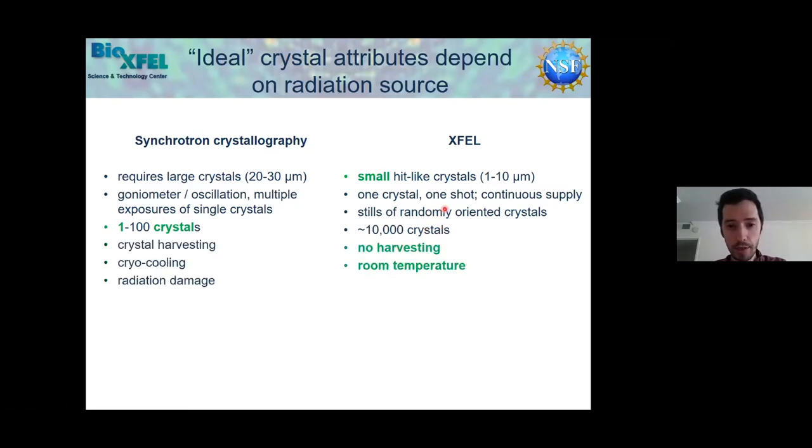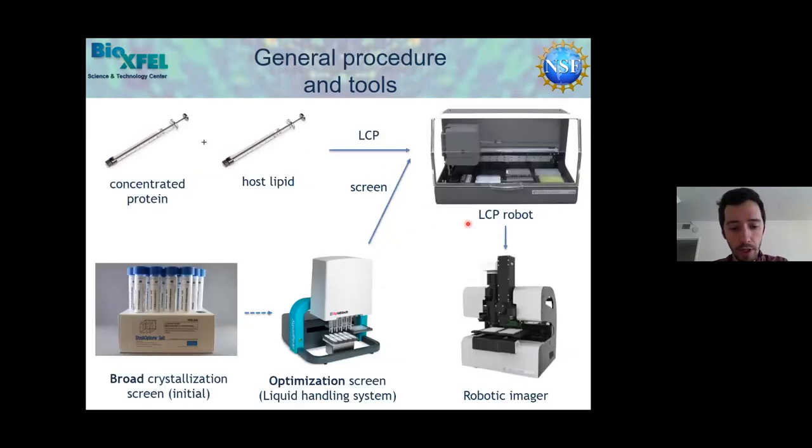The general procedure for setup and optimization is as follows: We have concentrated protein, for GPCRs this concentration can be 20 to 50 milligrams per milliliter, which is mixed with host lipids in a gas-tight coupled syringe setup. Then a robotic system is used to dispense small quantities of LCP on glass sandwich plates in a 96-well plate format, and we overlay it with precipitants to induce crystallization. The precipitant first comes from a broad initial screen—we use a 48-salt screen from Hampton typically at two concentrations. Later, when specific salts have been identified as crystallogenic, a grid screen around these conditions could be done.